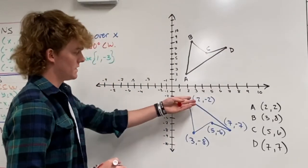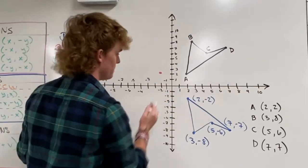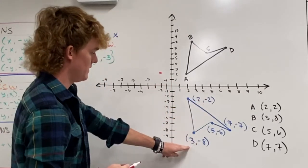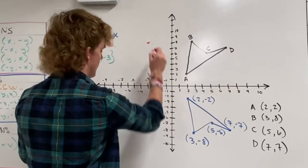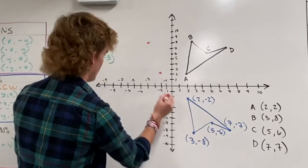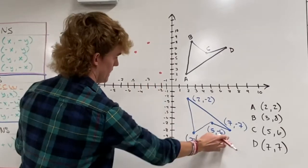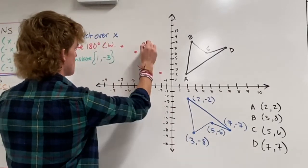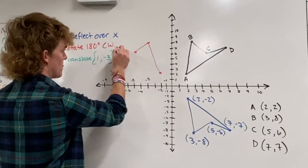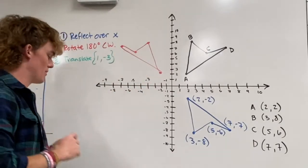So this one we're going to change the sign of both: it'll become (-2, 2). This will become (-3, 8), (-5, 6), and (-7, 7). That looks terrible but don't worry about it.